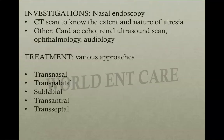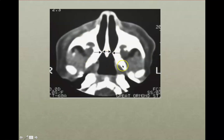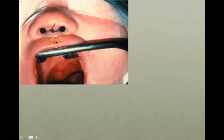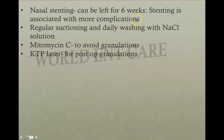You need to remember the names of these approaches, not the entire procedures. This CT scan shows bilateral stenosed choanal cavities — you can see the airway is not open and both nasal cavities are stenosed. After removing the stenosed part, nasal stenting can also be performed. These stents can be left for six weeks after surgery, but stenting is associated with more complications such as crusting and dryness.